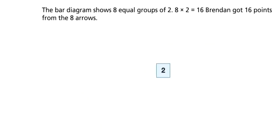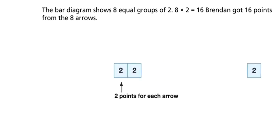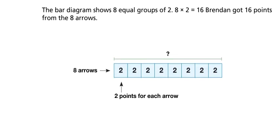The bar diagram shows eight equal groups of two. Eight times two equals sixteen. Brendan got sixteen points from the eight arrows.